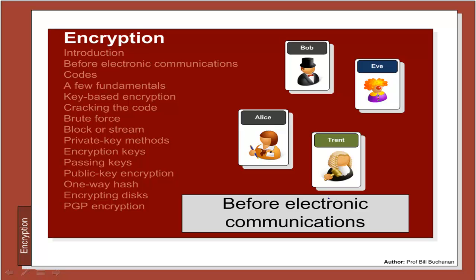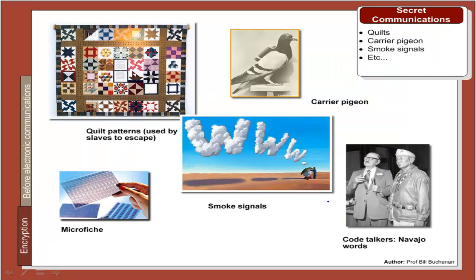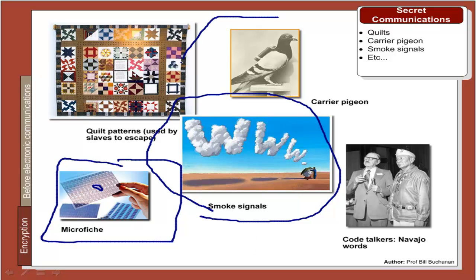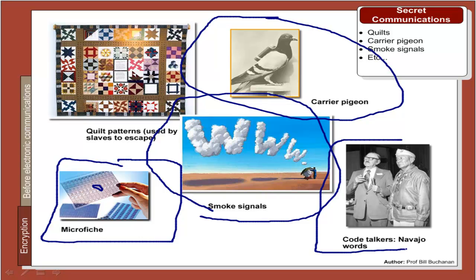What were some of the methods used before electronic communications? We have all seen examples of microfiche, where secret messages could be stored in very small areas. The Indians used smoke signals, carrier pigeons have been used extensively, and in the Second World War the Navajo language was used to pass secret codes. Along with this, we can see quilt patterns that were used by American slaves that actually described a map of how to escape.